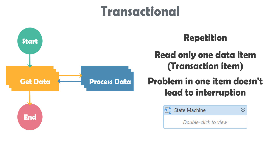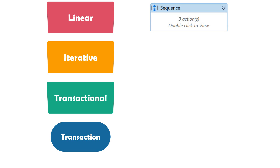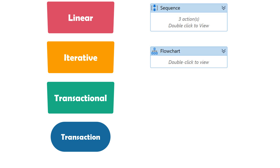Let's summarize these categories. Linear processes are for simple processes where execution is performed only once for one data item, implemented mostly using a sequence. Iterative processes are for repetitive processes where the same steps execute for different data — the data is read all at once — implemented mostly using a flowchart. Transactional processes are also repetitive, executing the same steps for different data, but data is processed one by one after reading it one by one, implemented mostly using a state machine.